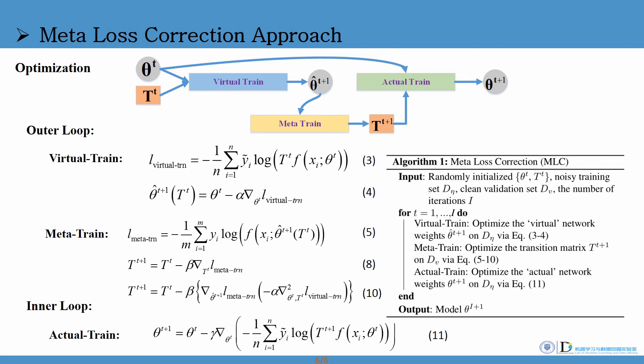With updated network, we update T on clean dataset using CE loss via GD in meta train. Finally, with updated T, we update network on noisy dataset using LC loss via SGD in actual train.